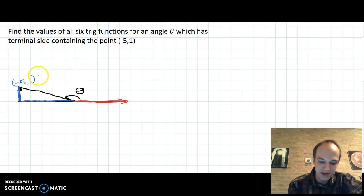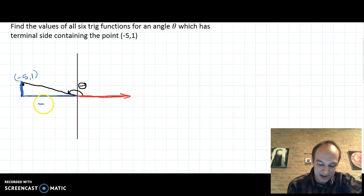And I'm going to label the sides of the reference triangle with the coordinates. So since the x-coordinate is -5, I'm going to call that side -5. And since the y-coordinate is positive 1, I'm going to call the vertical side 1. The reference angle is the small angle inside the triangle.